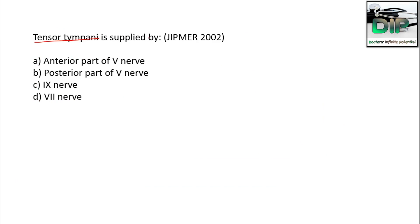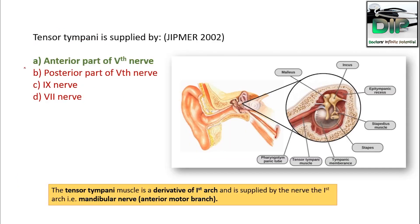Tensor tympani is supplied by — anterior part of the 5th nerve, posterior part of the 5th nerve, 9th nerve, or 7th nerve? The correct answer is the anterior (motor) part of the 5th nerve — the mandibular nerve. Tensor tympani is a derivative of the first branchial arch, supplied by the first arch nerve, which is the mandibular nerve.